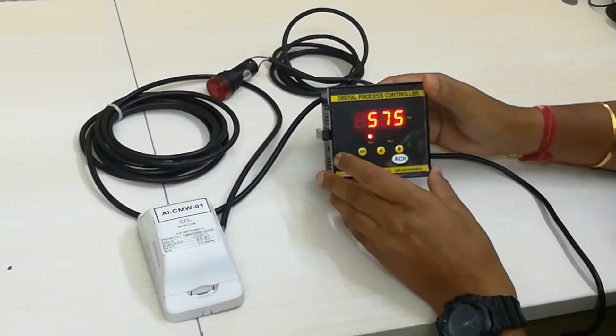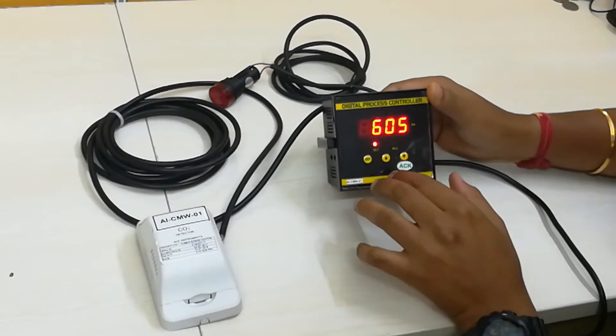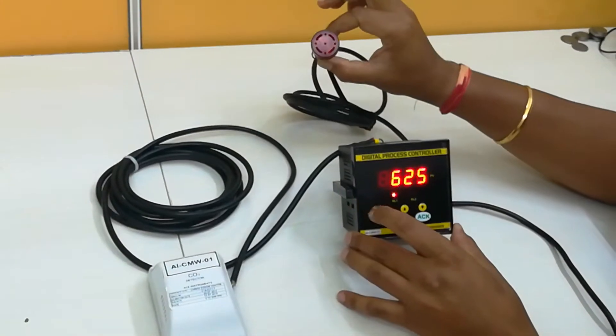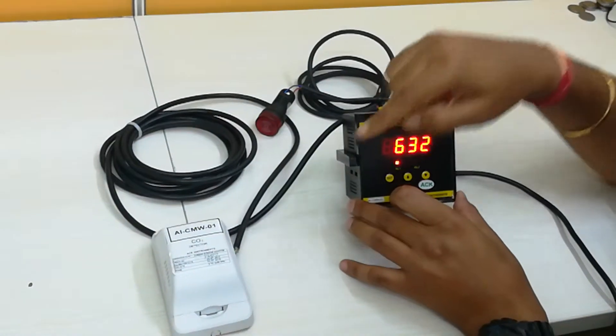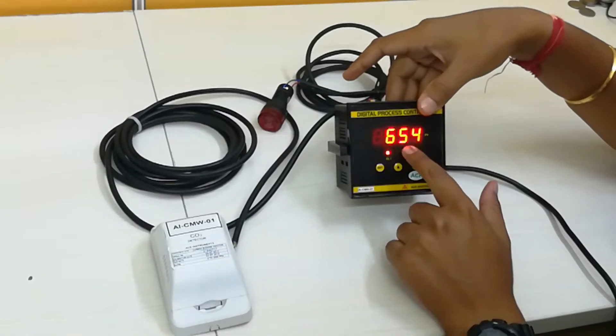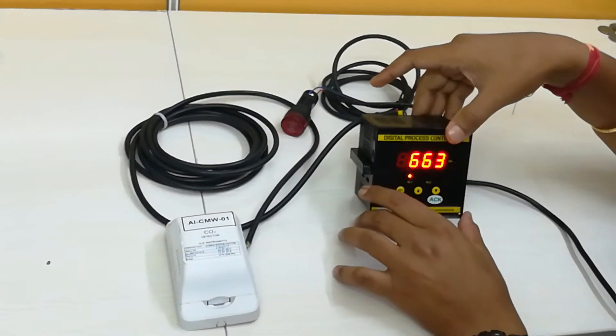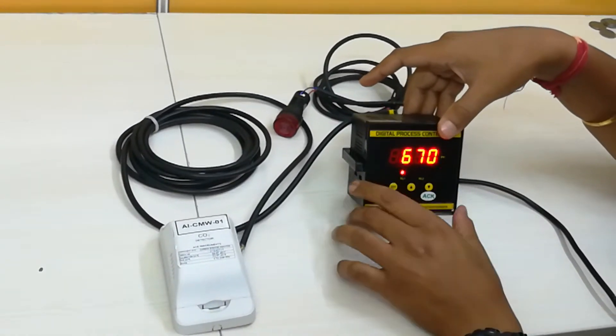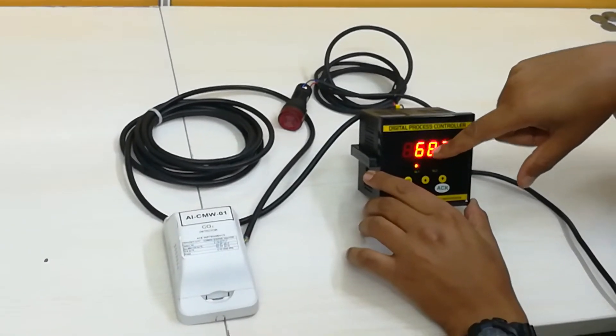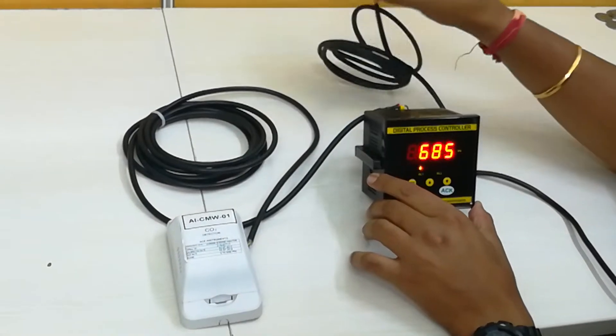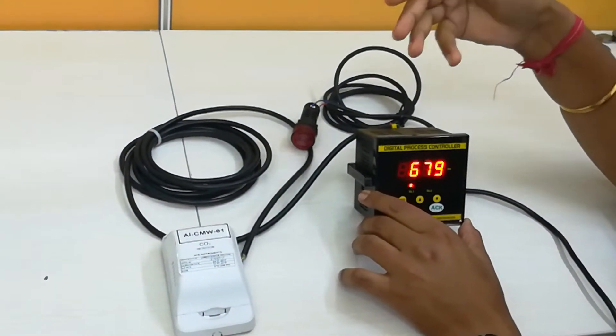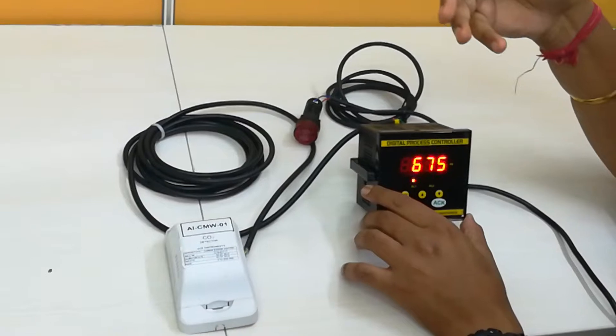This is the digital process controller which has the program logic which can control any external instrument based on the values coming from the carbon dioxide transmitter. As you can see this is showing the current ppm level which is 665 something like that, and we can set the control set points for controlling external devices like alarm, buzzer, door closer, door opener, exhaust fan, or any other device.